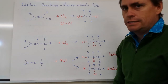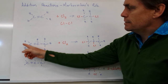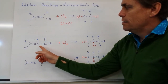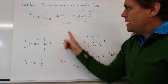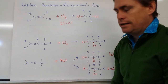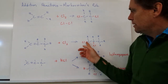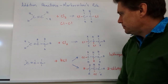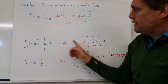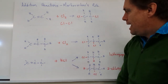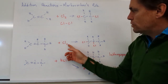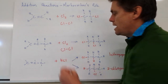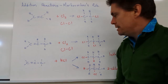Now we can have a second situation where we have an unsymmetrical hydrocarbon. In this case, we've got 1-propene reacting with our symmetrical molecule once again to give us 1,2-dichloropropane. The chlorine comes in over the top of the double bond, and it doesn't matter which chlorine goes to which carbon — the end product will be the same.